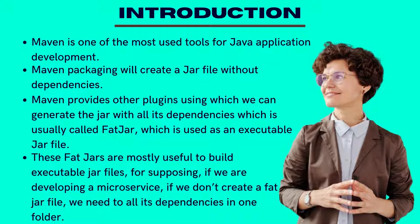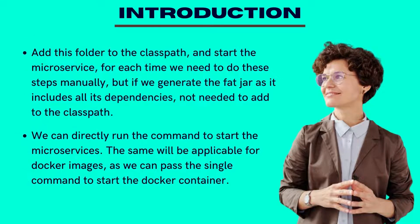These fat jars are mostly useful to build executable jar files. For example, if we are developing a microservice and we don't create a fat jar file, we need to put all its dependencies in one folder, add this folder to the class path, and start the microservice. Each time we need to do these steps manually, but if we generate the fat jar, as it includes all its dependencies, we don't need to add them to the class path. We can directly run the command to start the microservice. The same will be applicable for Docker images, as we can pass a single command to start Docker.